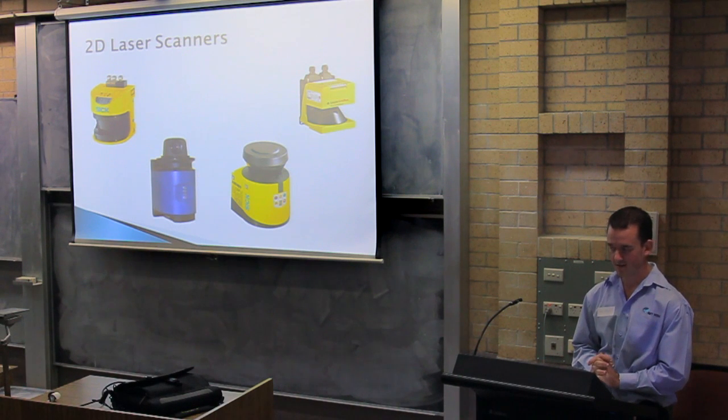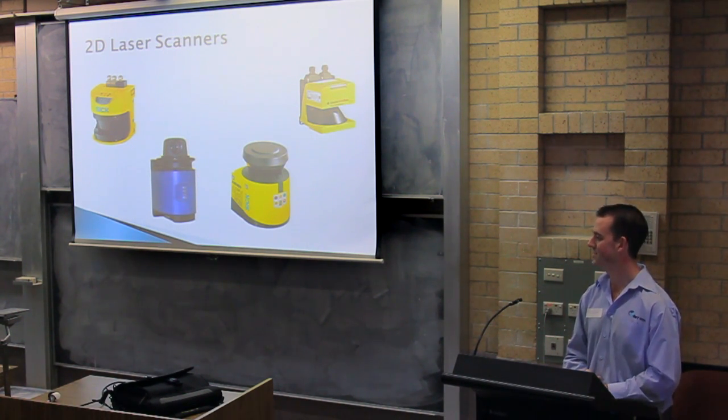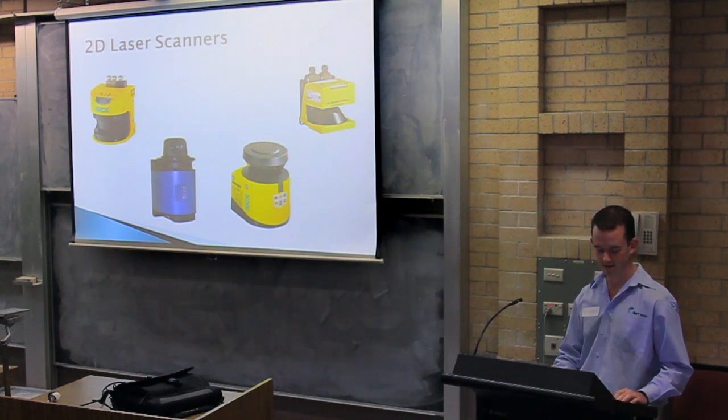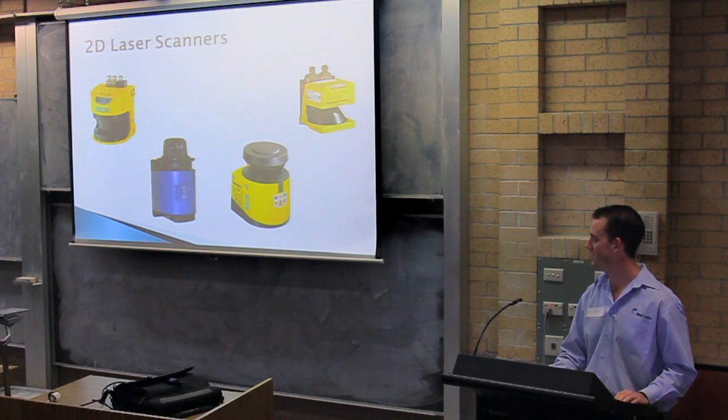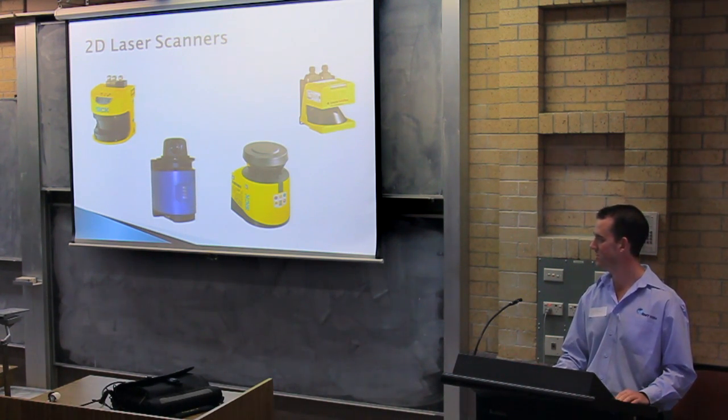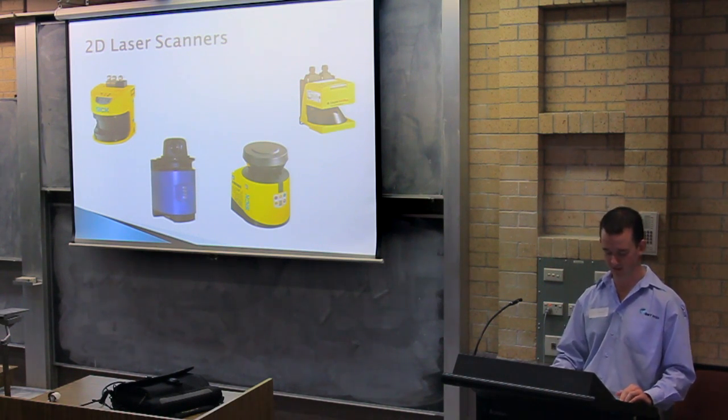In contrast to the 3D scanners, you have 2D laser scanners. These are far better suited to industrial environments. These are largely used in anti-collision applications on mine sites and typically come housed in IP67 rated die-cast aluminum enclosures.